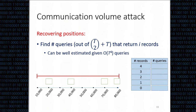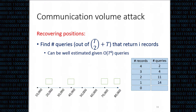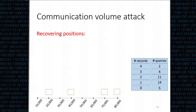After observing enough queries, the adversary can build a table capturing how many unique range queries return a specific number of records. He finds how many unique queries return 4 records—just 2 such queries—then how many return 3 records—4 queries total—and continues for 2, 1, and 0 records. This table is the only information the adversary has, and the distribution of records in the index domain is what we want to reconstruct.